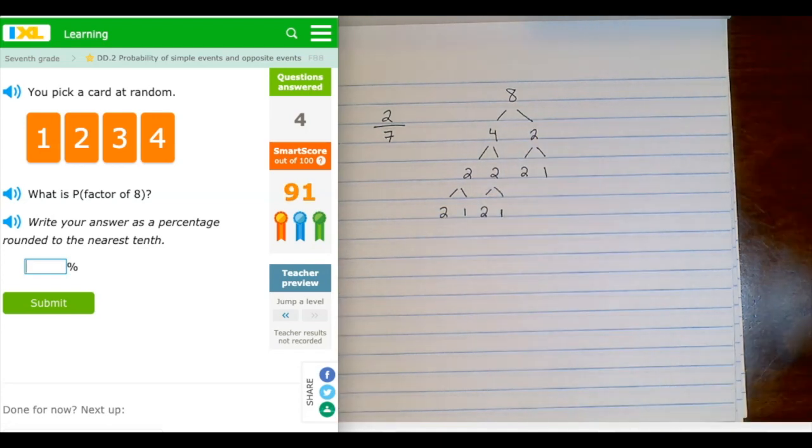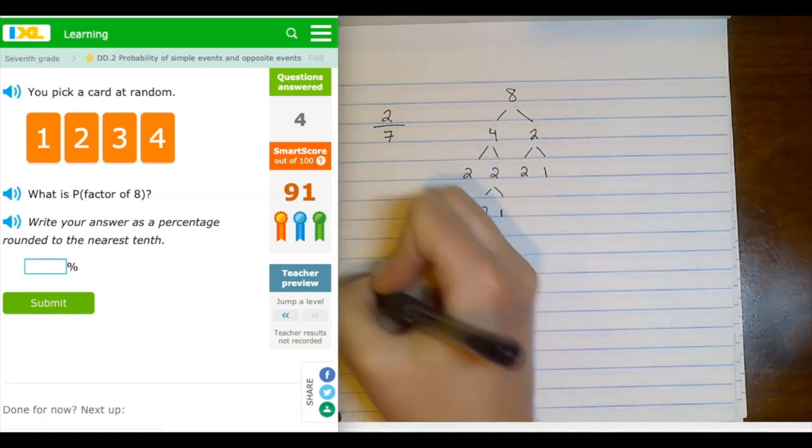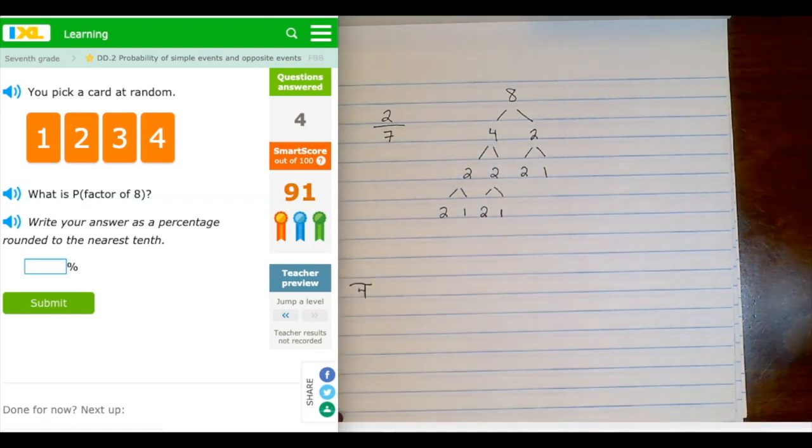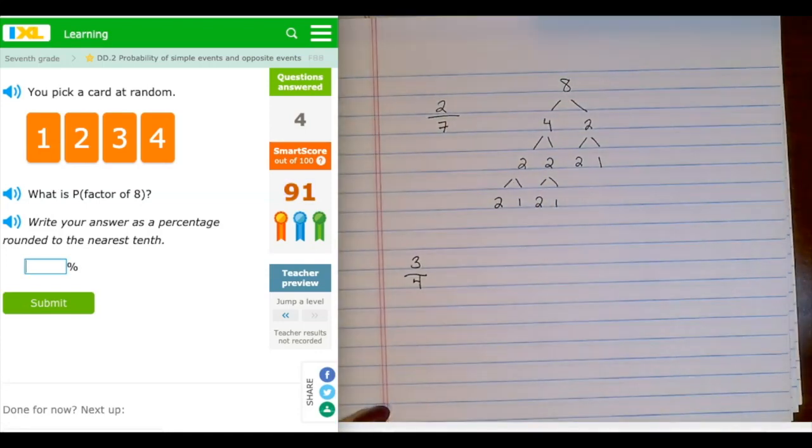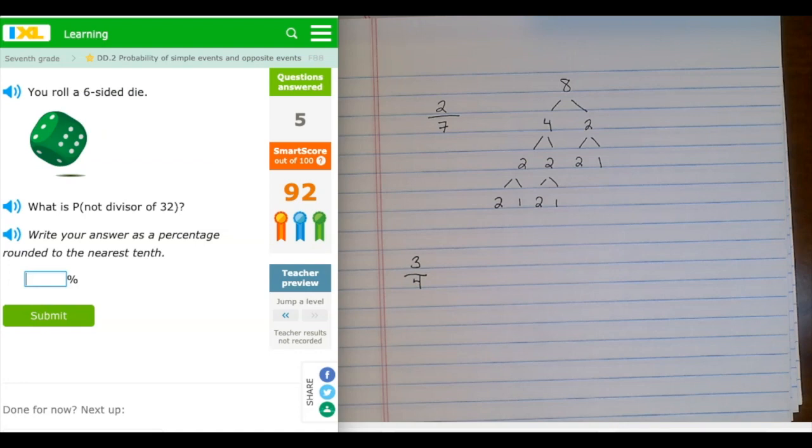So if I can look at my factors on these cards, 1, 2, 3, and 4, it looks like the only one that is not a factor of 8 is the number 3. 1, 2, and 4 are, in fact, factors. So that means that of the 4 options, which would be the bottom of my fraction, I would have 3 of those options. The 1, 2, and the 4 all work. So that would be a 75% chance that we will draw a factor of 8.